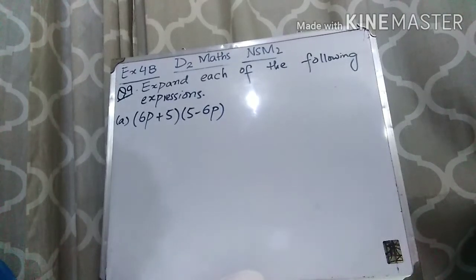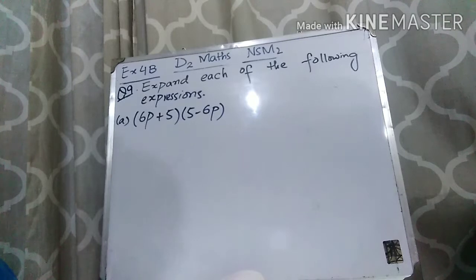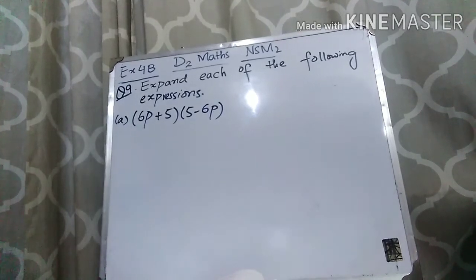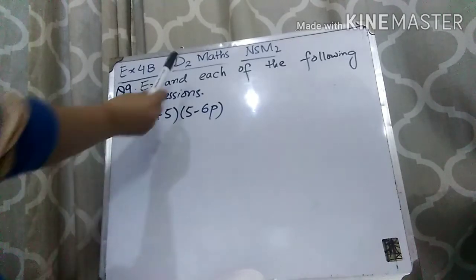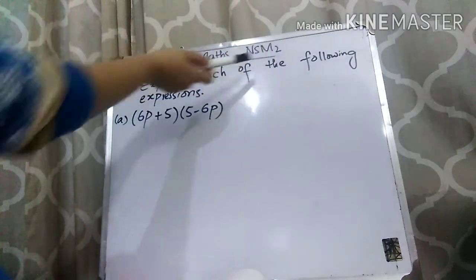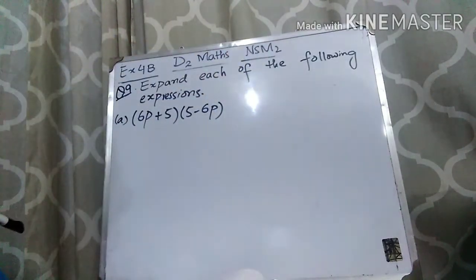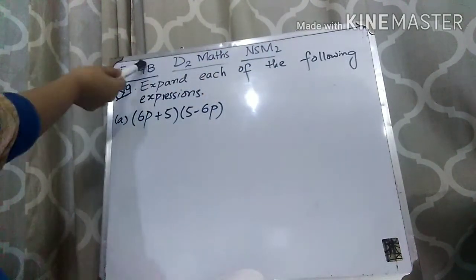Assalamualaikum students, how are you all? I hope that you all are doing great. Welcome to your channel Maths D1D2 Scientific Academy. Today our lecture is related to Chapter 4, which is Expansion and Factorization of Algebraic Expressions, and your book is D2 Maths, also known as Mathematics 2. I am going to explain to you question number 9 of Exercise 4B.